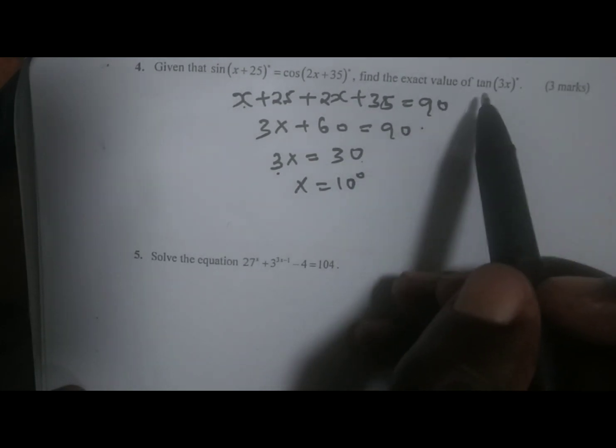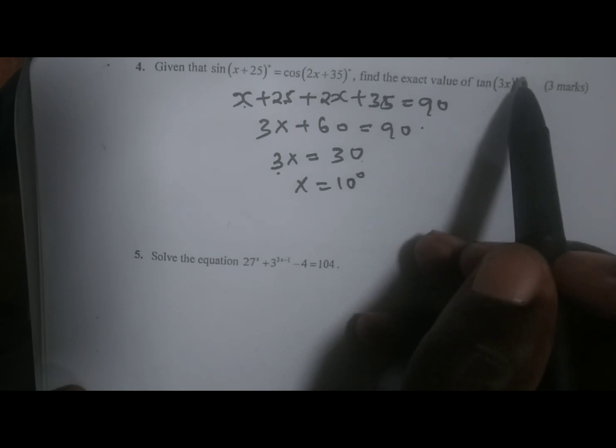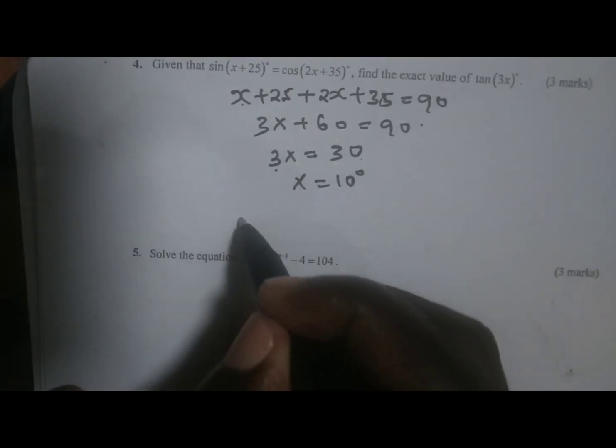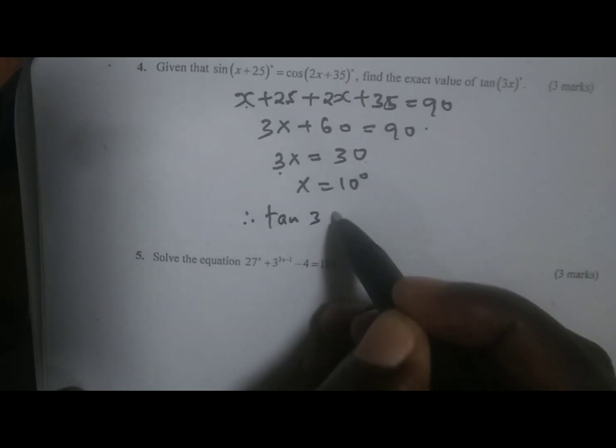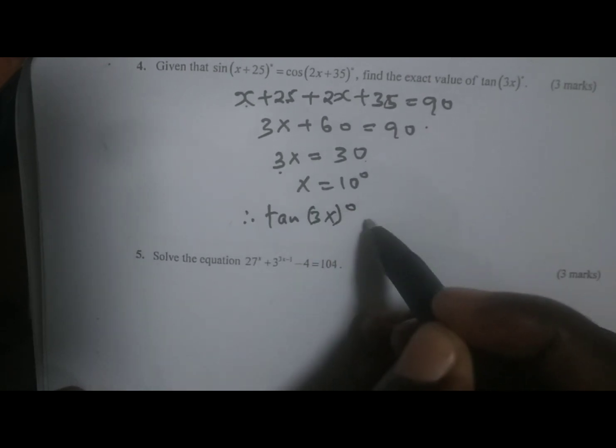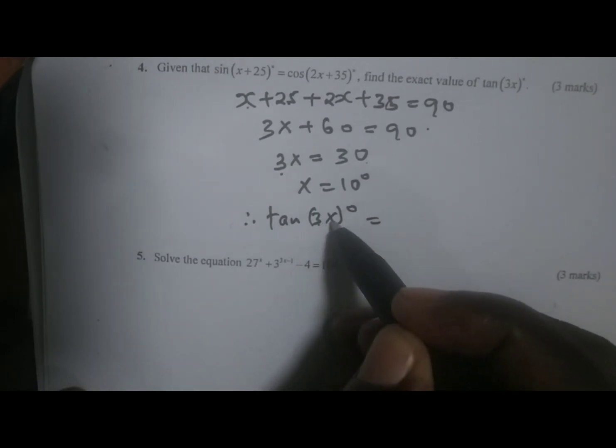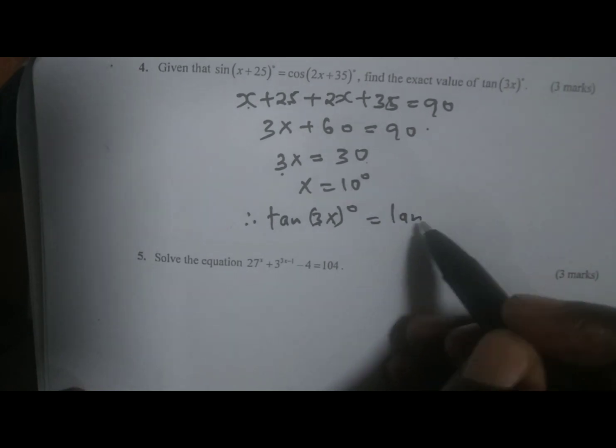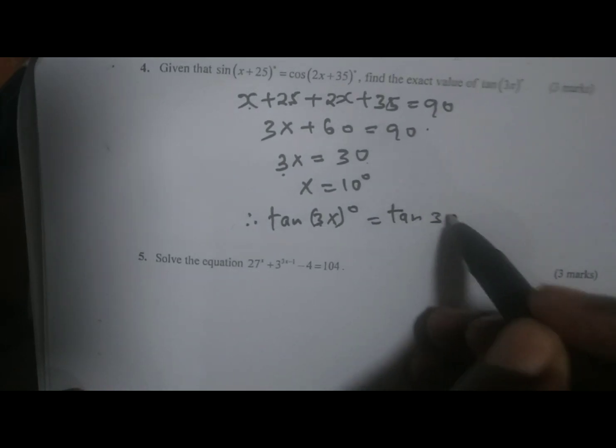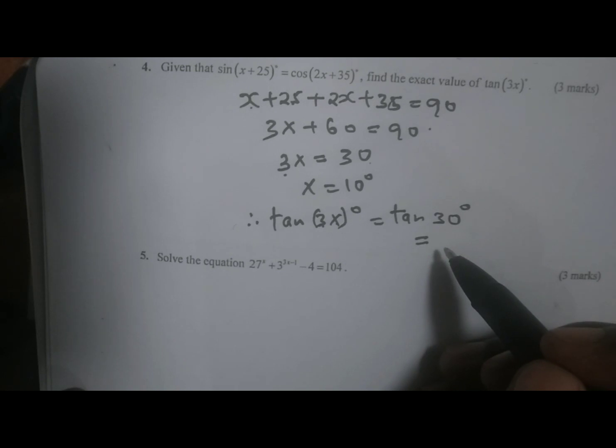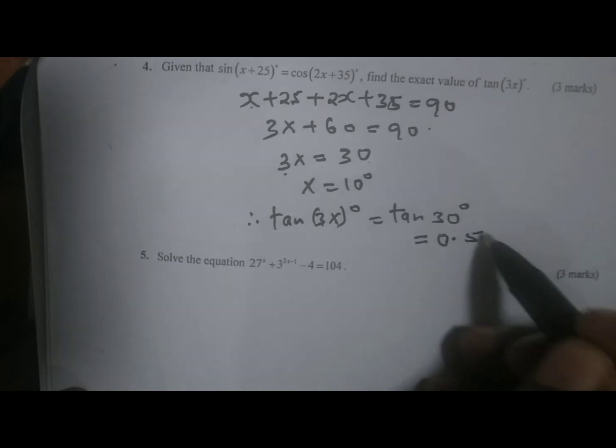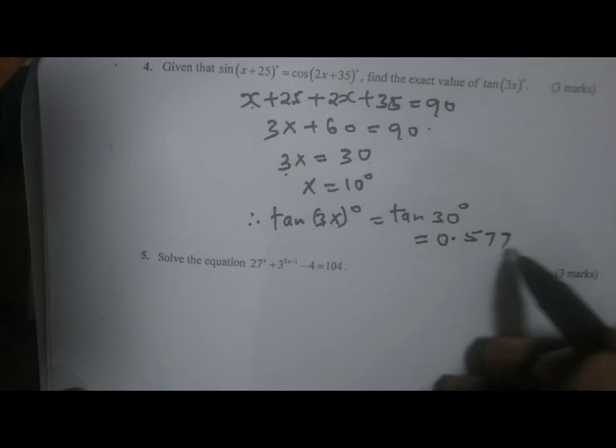Remember, we are supposed to find tan(3x) degrees, and therefore we can say tan(3x) degrees is the same as 3 times x, x being 10, giving us tan(30) degrees. To get tan 30 degrees, we use our calculator, and when you press tan 30, you get 0.5774, correct to 4 significant figures.